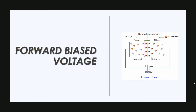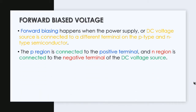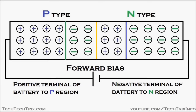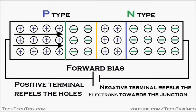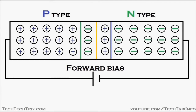Now, after we know about PN junction, let's find out about forward bias voltage. In forward biasing, the positive terminal of the battery is connected to the P region of the PN junction and the negative terminal of the battery is connected to the N region. The positive terminal repels the holes in the P region and the negative terminal repels the electrons towards the junction in the N region, so pressure acts towards the junction and this results in the junction shrinking — you can see the junction is shrinking in the animation.